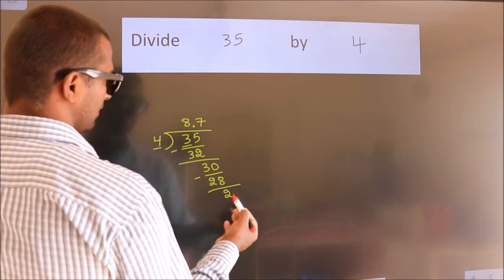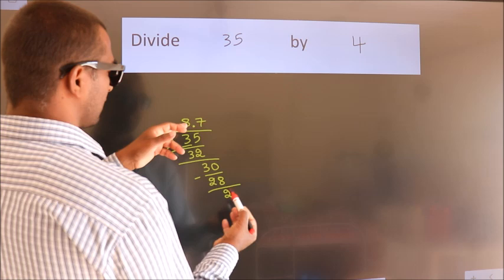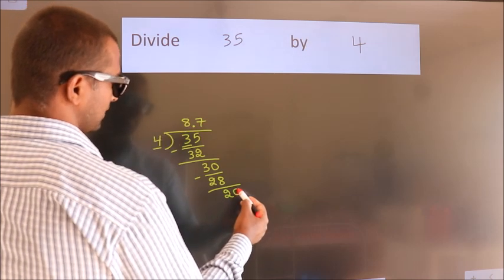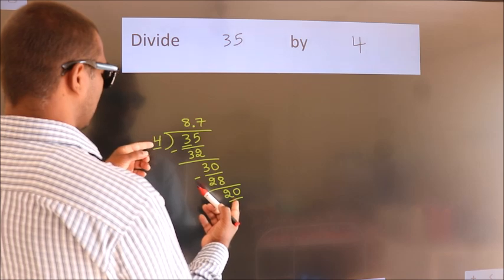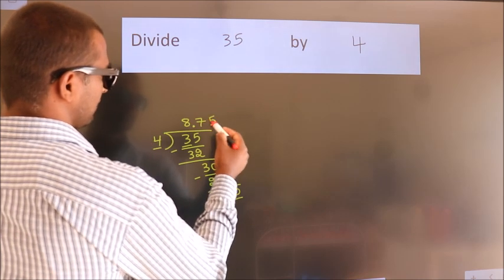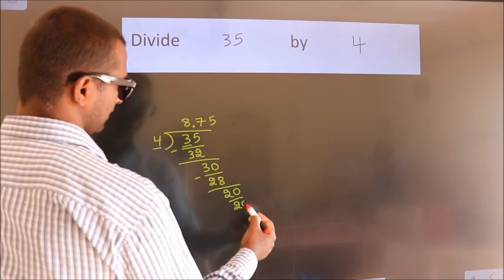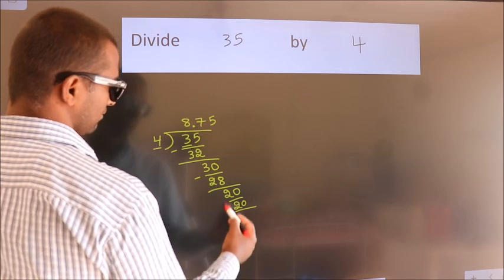After this, we already have the decimal, so directly take 0. So 20. When do we get 20 in the 4 times table? 4 times 5 equals 20. Now we subtract.